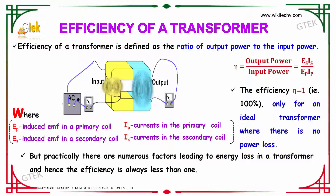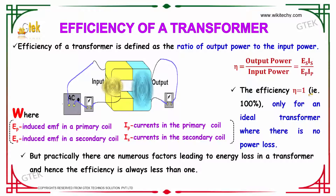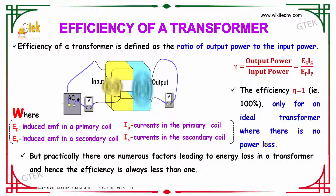We'll talk about the efficiency of a transformer. Efficiency of the transformer is defined as the ratio of output power to the input power. The secondary is the output power: Es multiplied by Is, divided by Ep multiplied by Ip. The efficiency is equal to 1, indicating 100%, only applicable for the ideal transformer where there is no power loss.